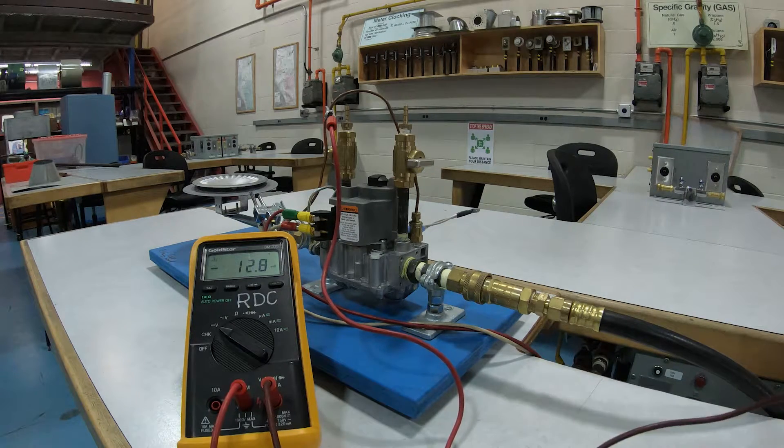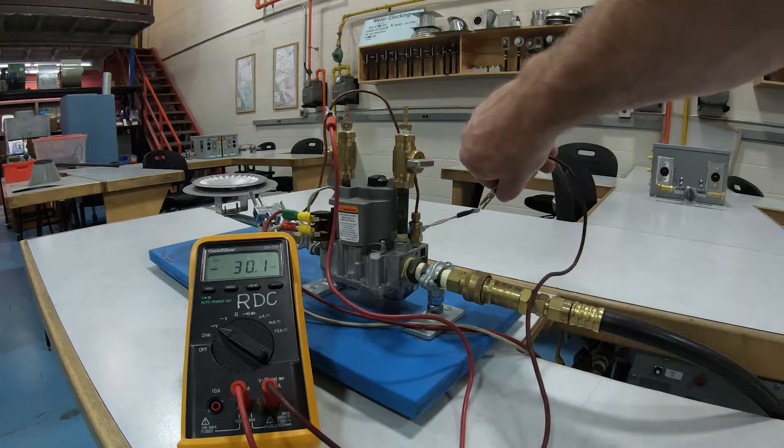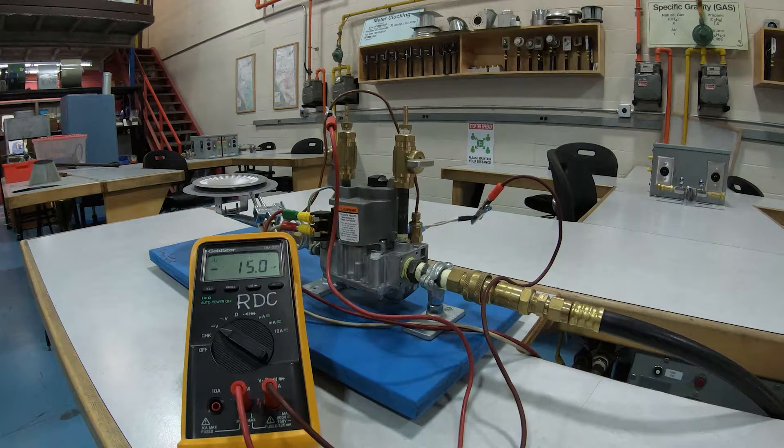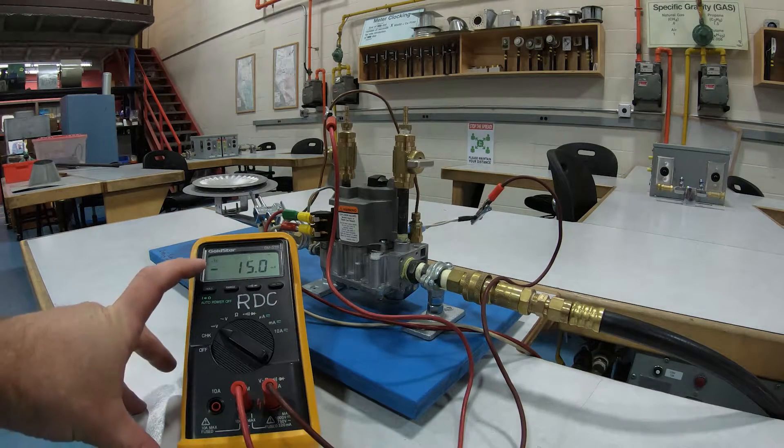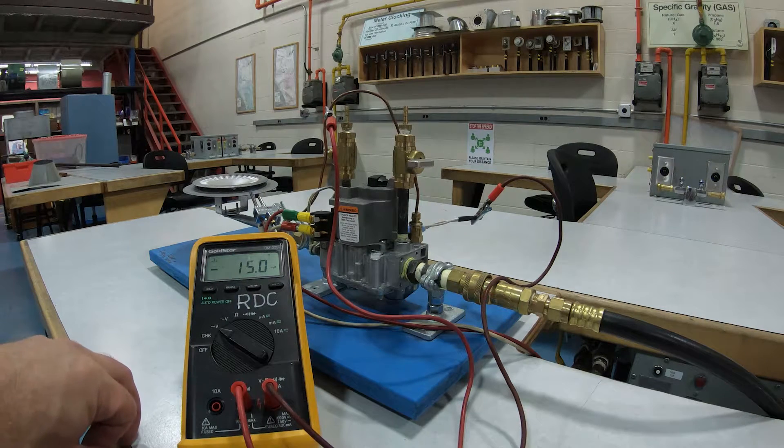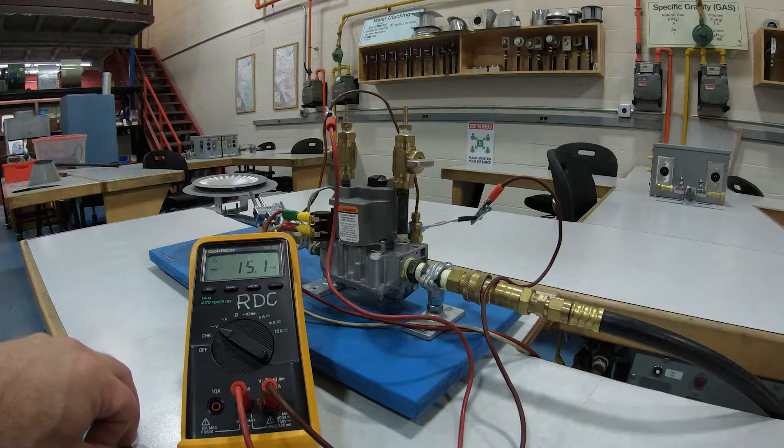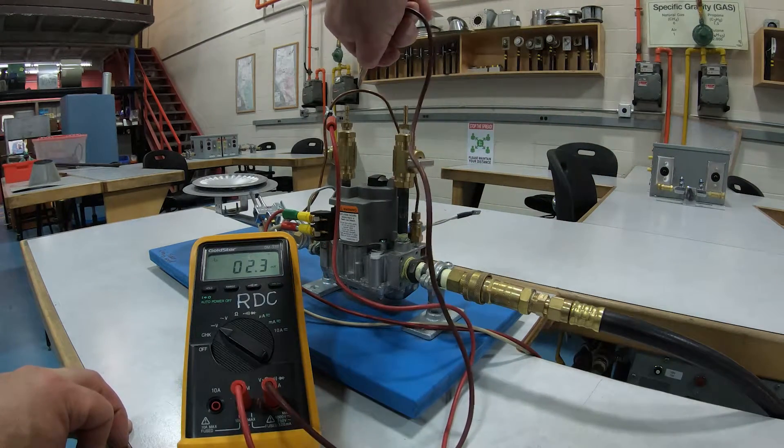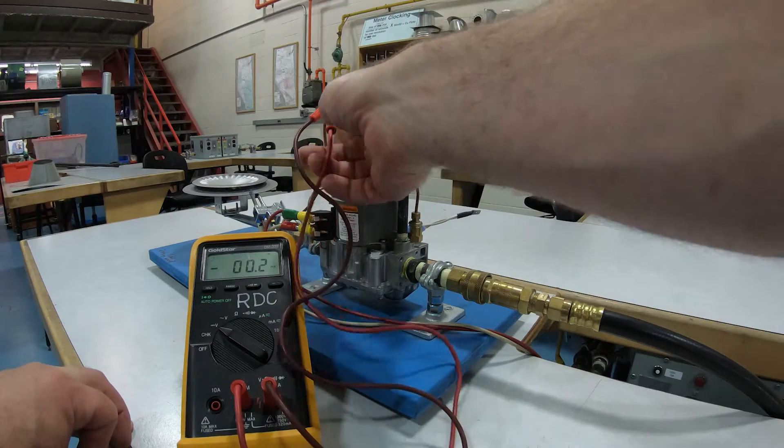Now we're going to take the other side and connect it onto this lead that's at the other side of the thermocouple. Now I'm registering negative 15 mV or millivolts. The reason why it's negative is because we've reversed polarity. It doesn't really matter. I'm going to change it around for fun. I'm just going to bring that over to that side.